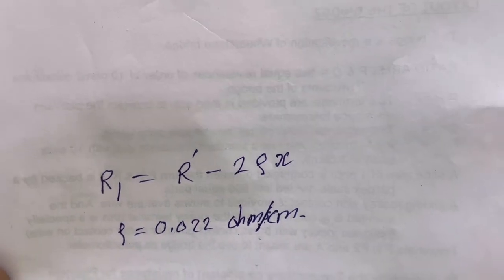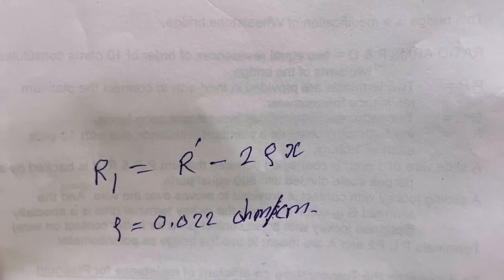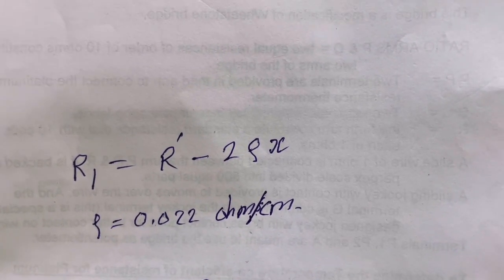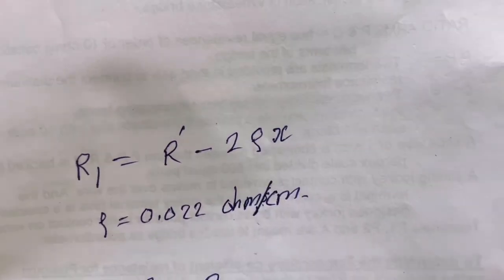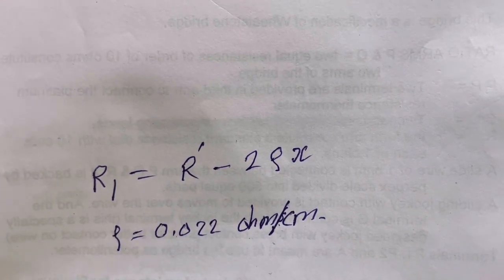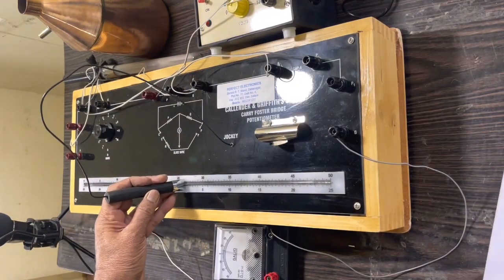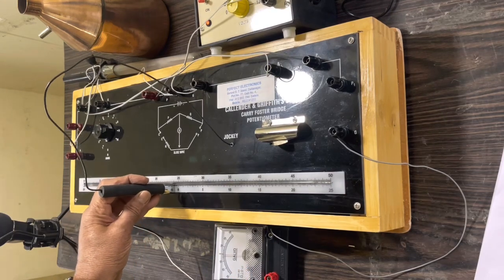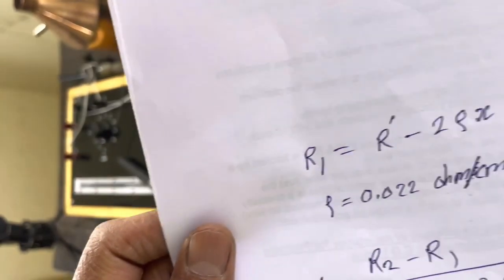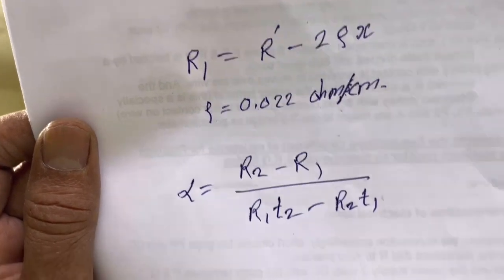R' is the resistance per unit length of the bridge wire, and it is given as 0.022 ohms per centimeter. Here we have to obtain the X value. X value can be obtained by getting the null point in the galvanometer. I am sliding the jockey on the wire — zero deflection is obtained at a distance of 24.5 centimeters.